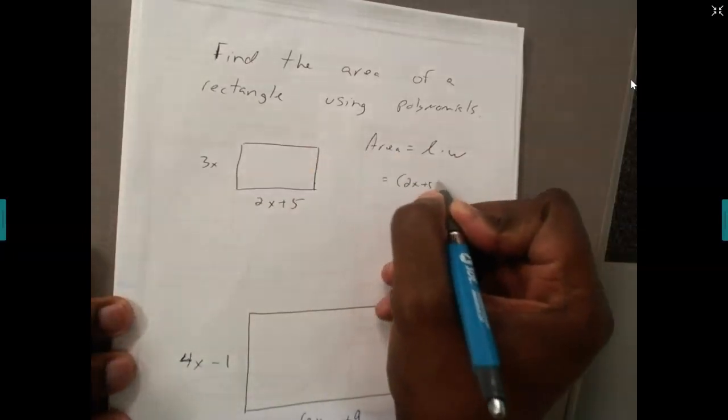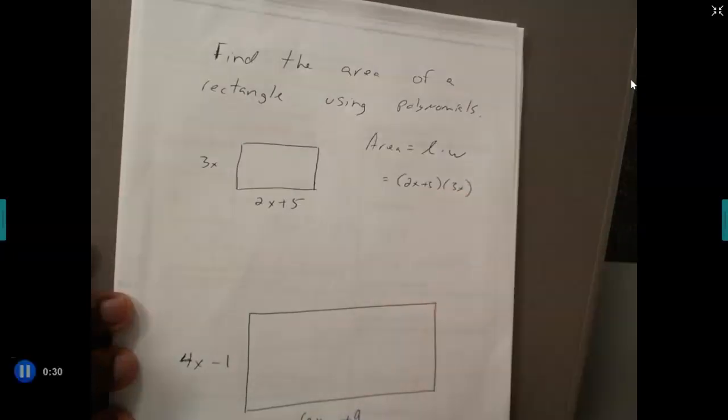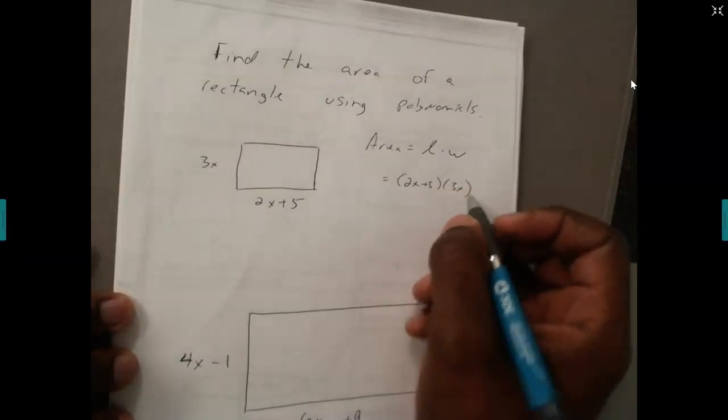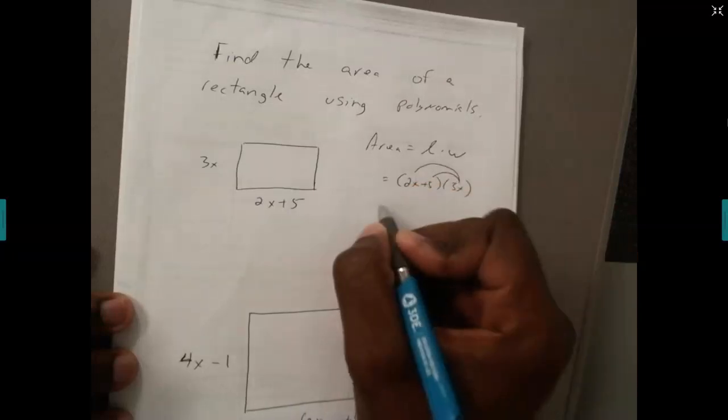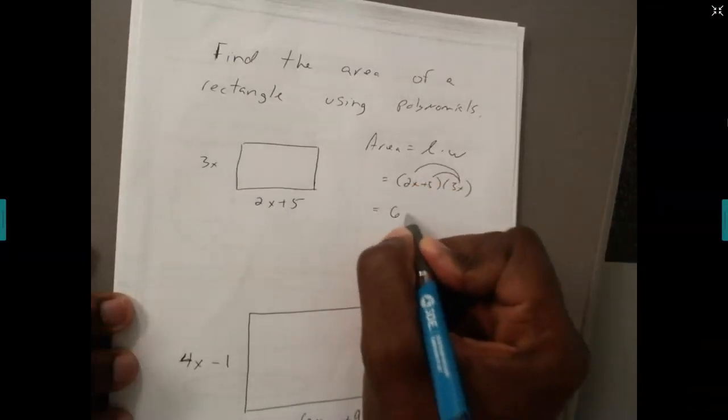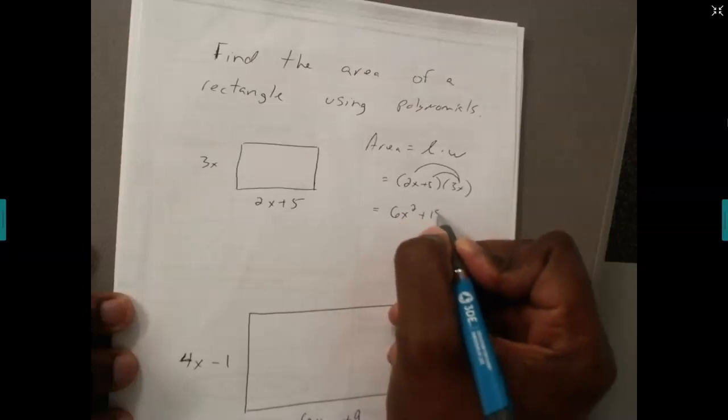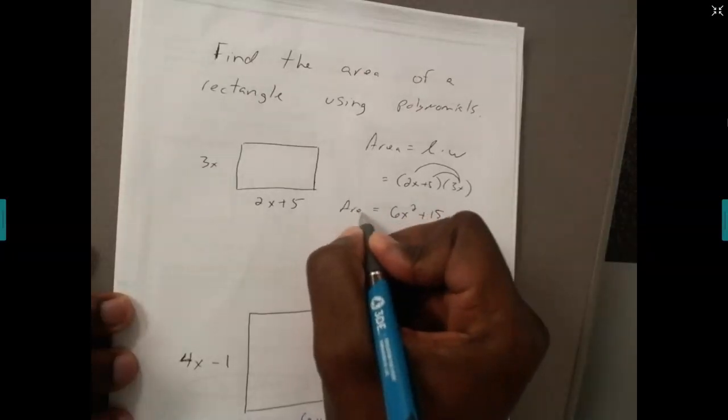It's going to be 2x plus 5 times 3x. To finish finding the area, I'm going to distribute the 3x into both terms, so I'm going to make this 6x to the second plus 15x. This is the area of this rectangle.